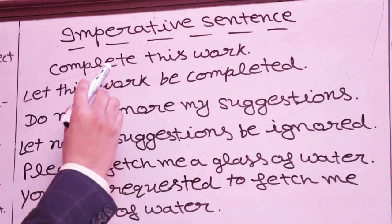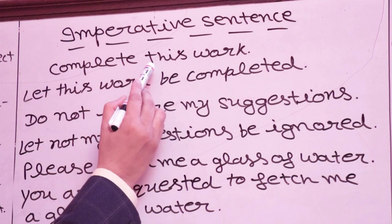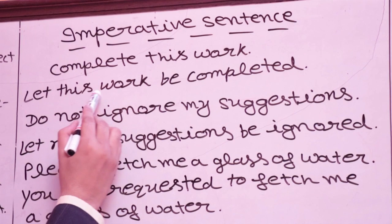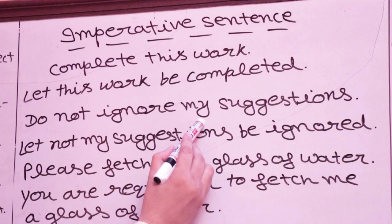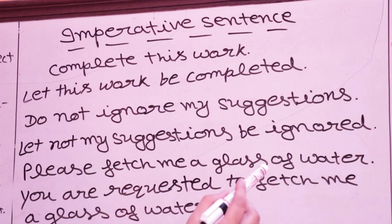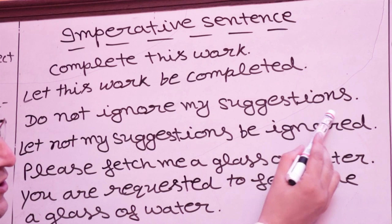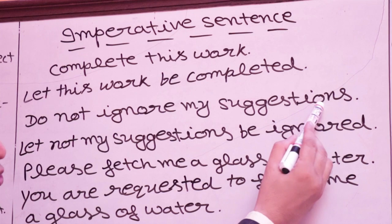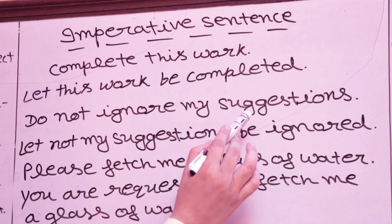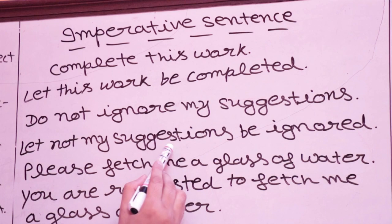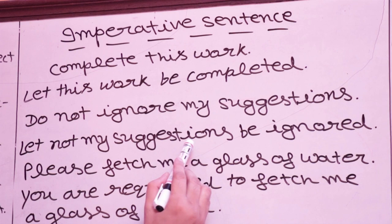Imperative sentences express order, command, or request. For order: 'Complete this work' → 'Let this work be completed.' 'Close the door' → 'Let the door be closed.' For negative: 'Do not ignore my suggestions' → 'Let not my suggestions be ignored.'